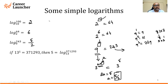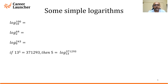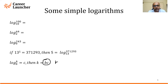One last example: if 13 to the power of 5 is 371293, then when you convert it into logarithm form, 13 becomes the base, 371293 becomes the logarithm part, and the power becomes your answer. So 5 will be log of 371293 to the base 13. There is a small error — it should be B to the power of C, not B to C.